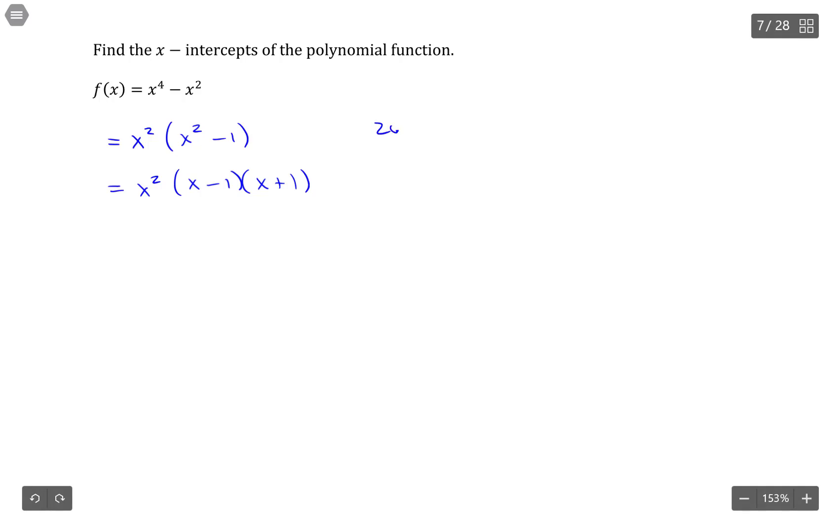So the zeros of this polynomial are x equals 0, because that comes from this term right here. But because of this square, that tells me it has multiplicity 2.